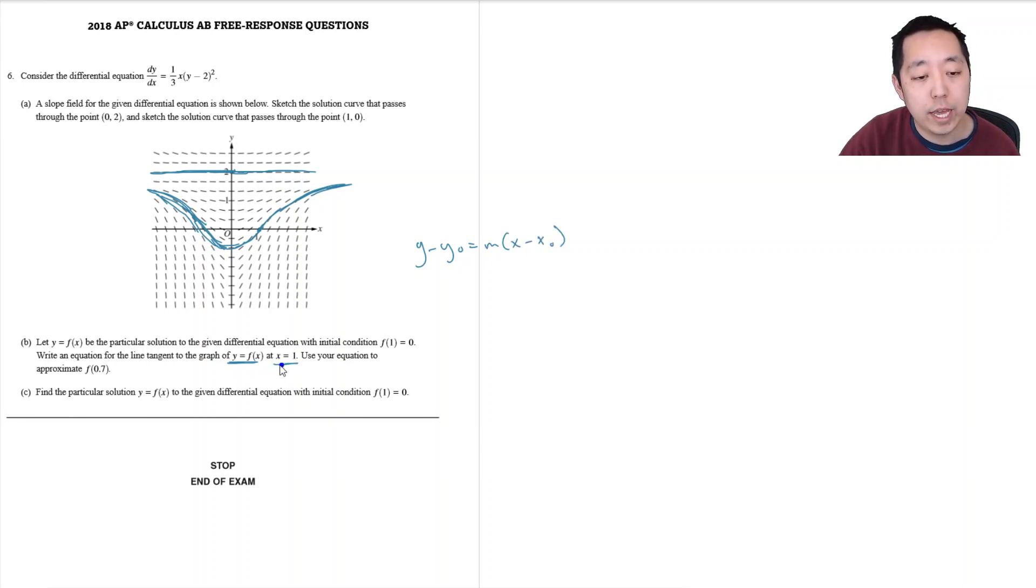So the point that it's going through at x equals one, we know that, so we know the x value is one so x naught is equal to one. And we know the y naught is f of x naught and they're already telling us this. So the way you have to interpret this is that it's y minus zero is equal to m times x minus one. Now all I need to know is what the m is.